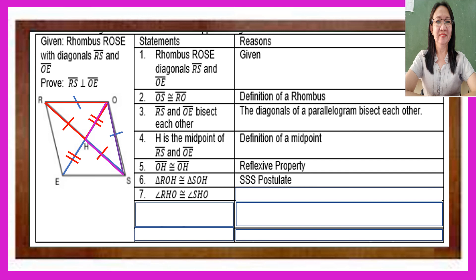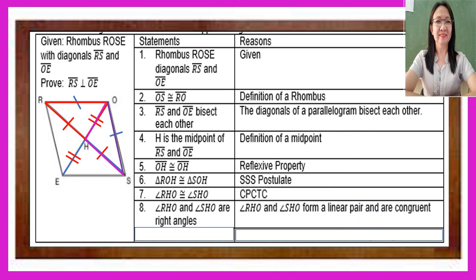Then angle RHO is congruent to angle SHO, because these are corresponding parts of congruent triangles. Now we can say that angle RHO and angle SHO are right angles, because they form a linear pair and are congruent — so 180 divided by 2 equals 90 degrees. Therefore, RS is perpendicular to OE, because perpendicular lines meet to form a right angle.